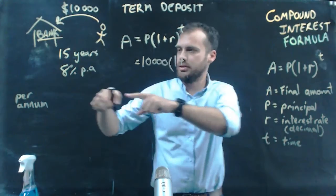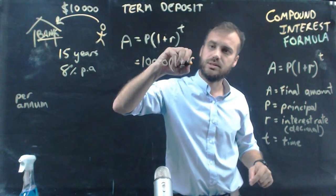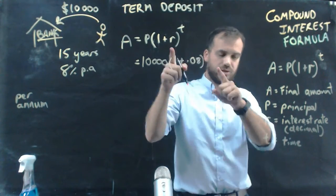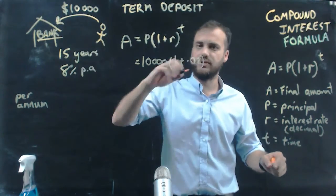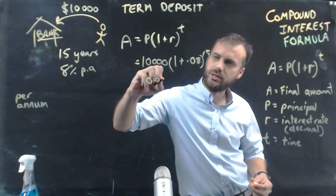plus our rate. Now, our rate is 8%, but as a decimal, that's 0.08. And the time, well, I'm going to put it in there for 15 years. I'm just going to do another line of work in here.